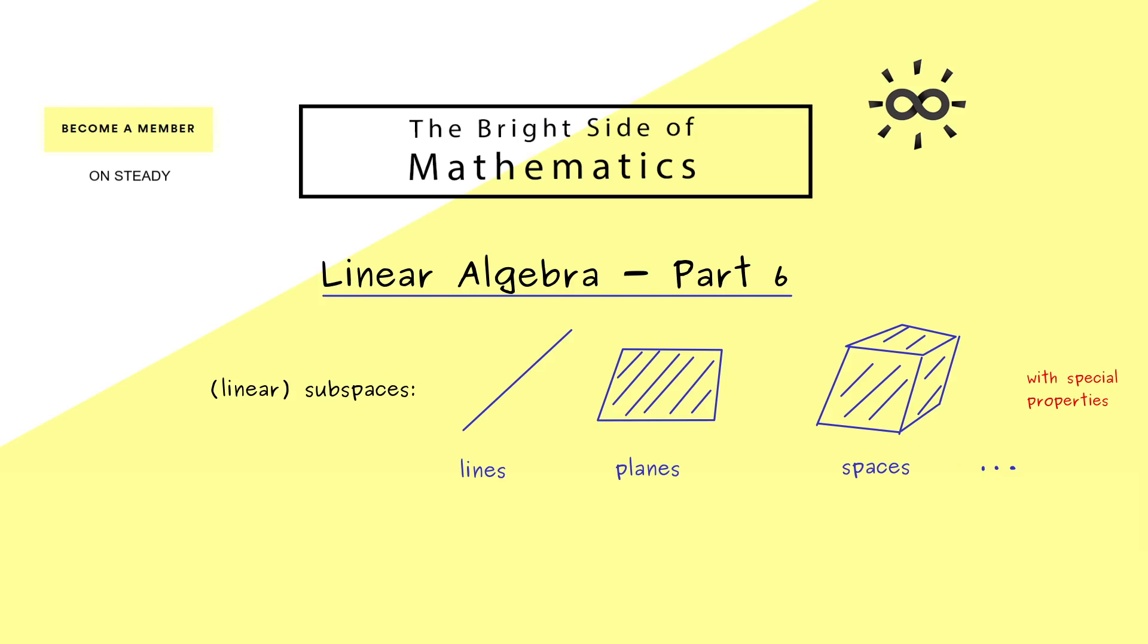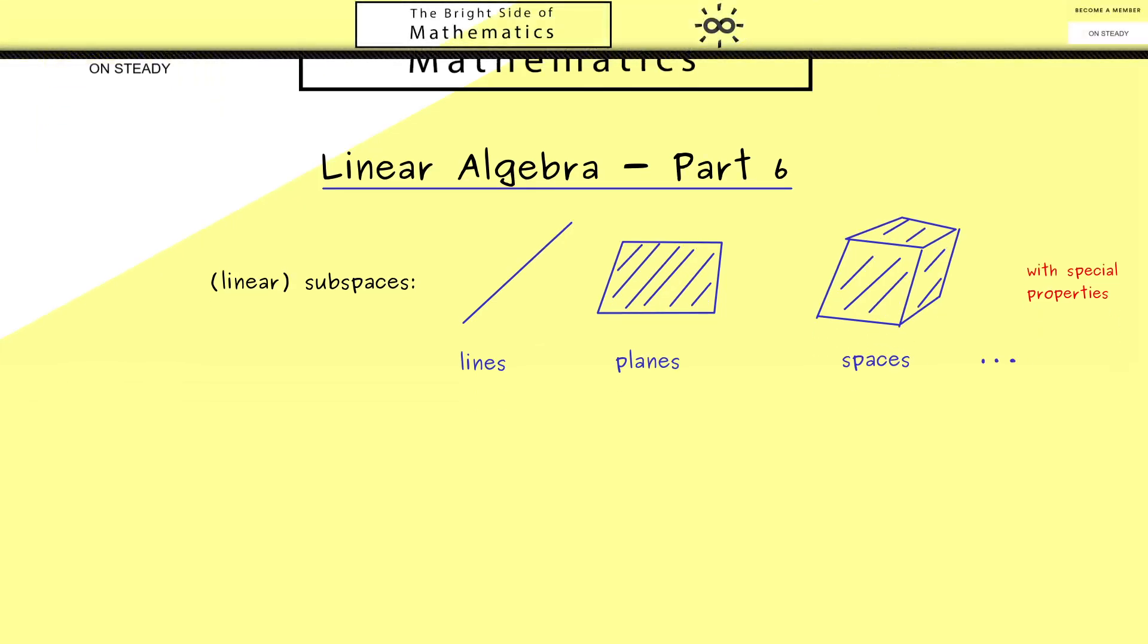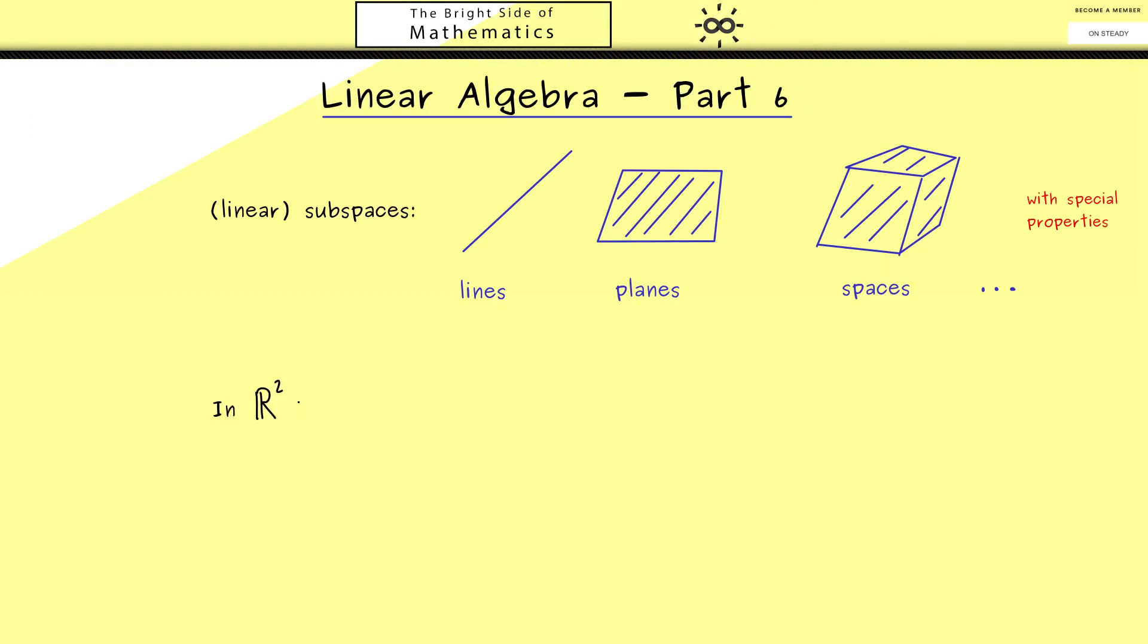But maybe let's first start with something we already know. Namely, we have already considered subspaces in the vector space R2. Of course we can easily visualize this vector space as a plane. And now you surely remember that in part 4 we have discussed lines in the plane. On the one hand we had lines that go through the origin, and on the other hand we had lines that don't go through the origin.